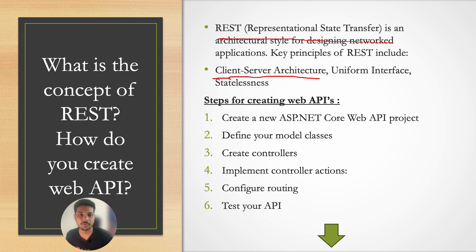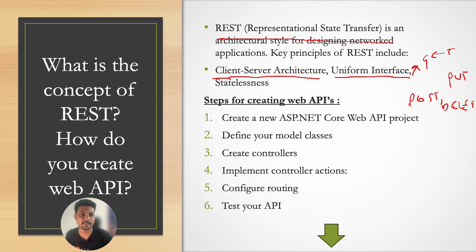REST also has a uniform interface, which means the APIs will use standard HTTP methods like GET, POST, PUT, and DELETE — uniform across implementations. It also follows the principle of statelessness, which means the server does not keep any information about the client. So whenever a client requests a resource, it has to provide all the necessary information to the server so it can act on that and return the relevant data.